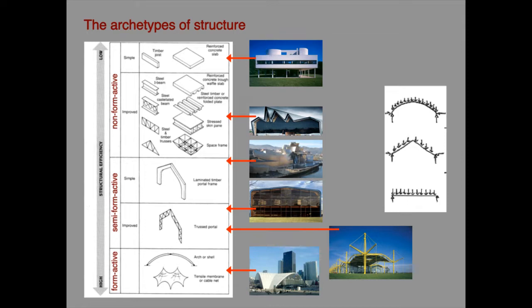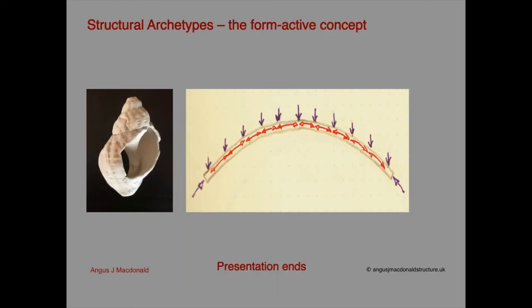The concept of the form active structure therefore provides a quick visual way of assessing the likely efficiency of a structure and therefore its carbon footprint. Of course, architects often have to use forms which are not form active because there are many other considerations besides structural efficiency that affect the design of a building. So the question is: can semi-form active or non-form active structures be made efficient? And the answer is yes, because the designer of a structure has control over other aspects of their form, most particularly the shapes of the structural elements in longitudinal profile and cross section. The effects of these aspects of form on efficiency will be discussed in the next presentation in this series, in which another set of structural archetypes are introduced.